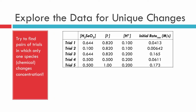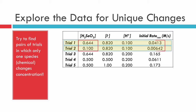We start by exploring the data for unique changes, which is easy to see when looking at trial one and trial two. The H2SeO3 concentration is changing, however the iodide ion and H⁺ concentrations do not change. Therefore, the change we see in the initial rate must be due to the changing H2SeO3 concentration.